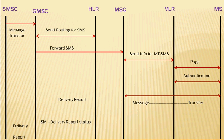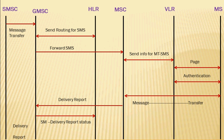The MSC will get the response from the mobile station as well. Upon receiving the same, it will send a delivery report to the GMSC, and the GMSC will in turn send the delivery report to the HLR as well as the SMSC. This is how the SMS flows in the mobile terminating scenario. Hope you find this video informative, and thanks for watching.